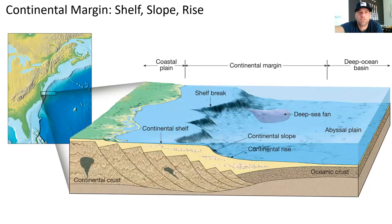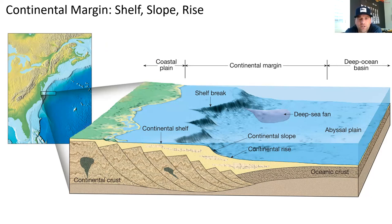The continental margin itself has a couple of primary features. The first feature is the continental shelf. It is very gently sloping and extends outward from the coastline. If you think about going to the beach in Southern California and driving down the 605 to get to Seal Beach, you notice it doesn't seem like you're going downhill, but you are. That's the same idea as if you were to take a boat away from the coastline — it's getting a little bit deeper, gradually.